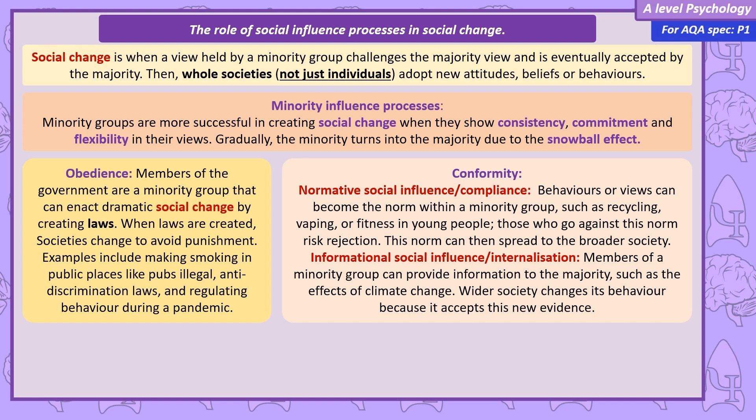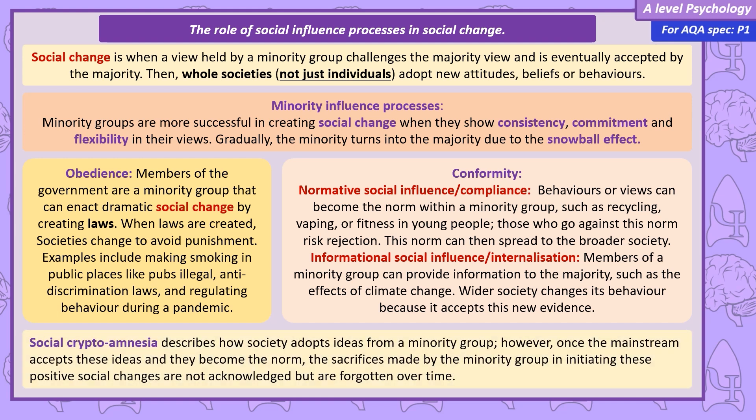One final term we can use is social cryptoamnesia. When promoting a new idea, minority groups often have to take extreme action to be noticed by the media and get their message talked about — this is usually disruptive and can include criminal action such as destruction of property, leading to arrests and imprisonment. Sections of the media and society will often demonise these groups and their actions. However, over time, these previously extreme positions can become mainstream, with society taking on the position of the minority group. At this point, members of the majority tend to forget that they took the idea from the minority group and forget the sacrifices made in promoting it, while the minority group often still faces stigma from the initial demonisation.